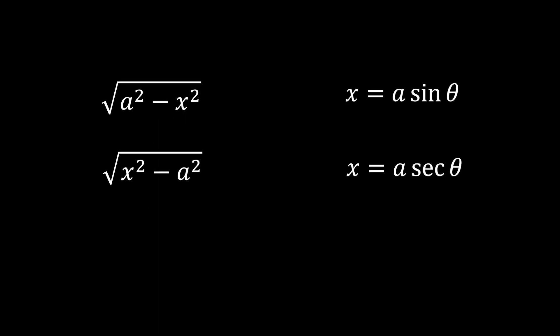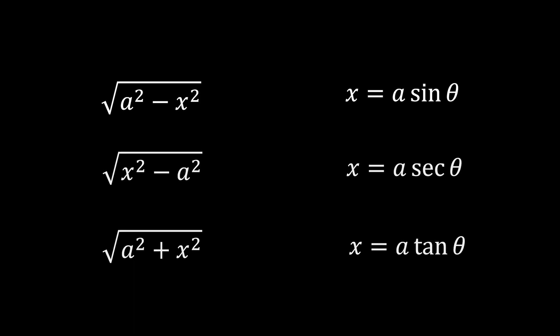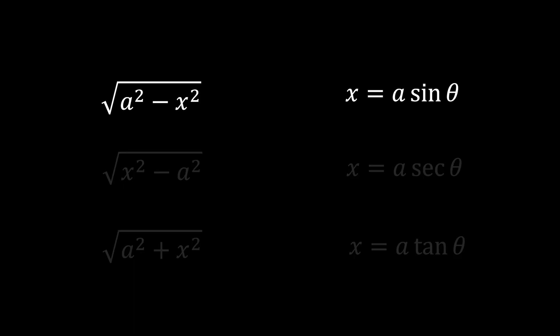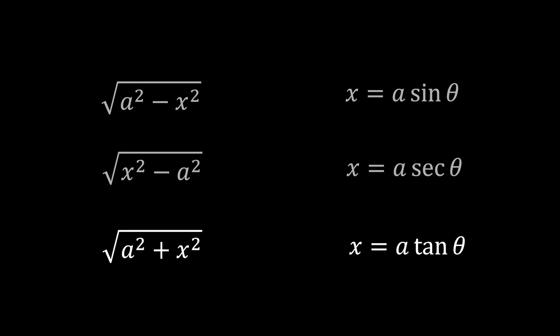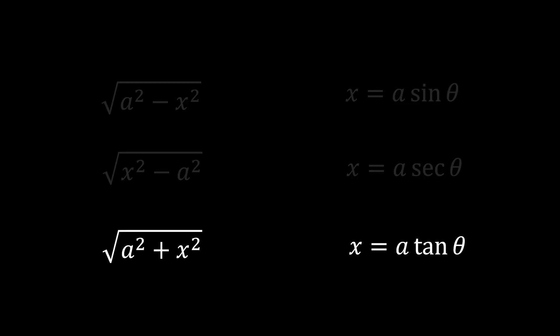Now let's dive into the rules of trigonometric substitution. If you have the square root of a squared minus x squared, you can substitute x with a times sine theta. If the order is reversed with x squared minus a squared, you can substitute x with a times secant theta. Finally, if you have the square root of a squared plus x squared, you can substitute x with a times tangent theta.